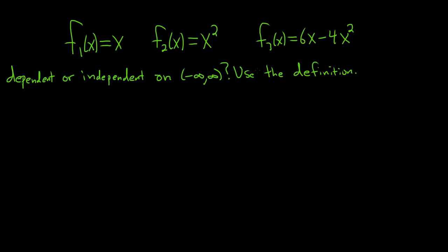First of all, note that these are actually dependent, because this function here, f sub 3 of x, depends on the other ones. You can write this as 6 times f1 of x minus 4 times f sub 2 of x. So f sub 3 of x depends on the other two functions, so it's dependent.